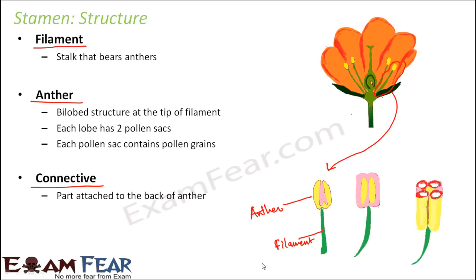The connective is the part attached to the back of the anther that connects its different lobes. If you see the anther — the yellow colored structure — the anthers are joined together by a pink colored structure, which is the connective. The anther is a bilobed structure: it has two lobes, and each lobe has two pollen sacs — cup-shaped structures inside each lobe that contain the pollen grains.